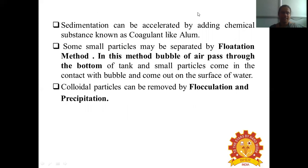Sedimentation can be accelerated by adding chemical substances like coagulants such as alum. Some small particles can be separated by the flotation method, where bubbles of air pass through the bottom of the tank and small particles come in contact with the bubbles and rise to the surface of the water. Colloidal particles can be removed by flocculation and precipitation process.